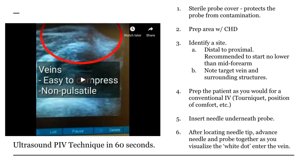Note not only your target vein but any surrounding structures — know if you will be near an artery or nerve. That's not a contraindication, but something to be aware of and take steps to avoid. Prep the patient as you would for a conventional IV: tourniquet, position of comfort, all that good stuff. Insert the needle underneath the probe and once you locate the needle tip, stop looking at your hands — watch the screen. This is the hardest part for new people to learn. After locating the needle tip on the screen, advance the needle and probe together while you visualize the white dot and enter the vein.